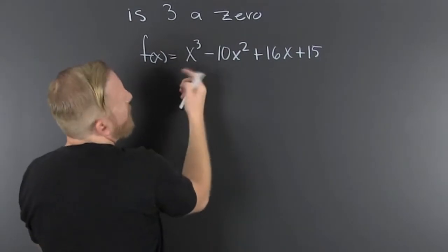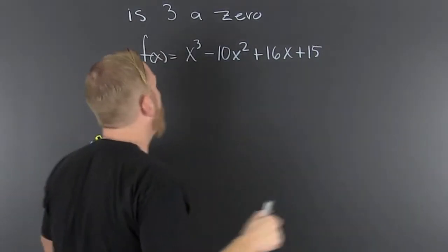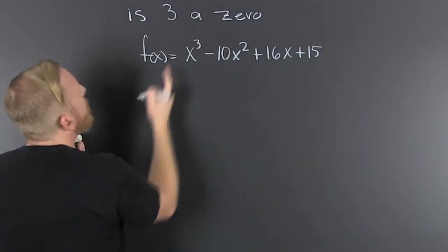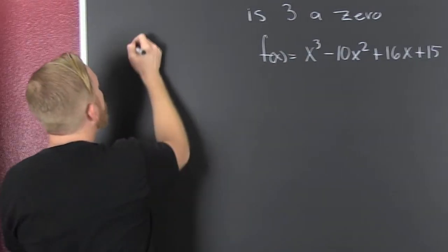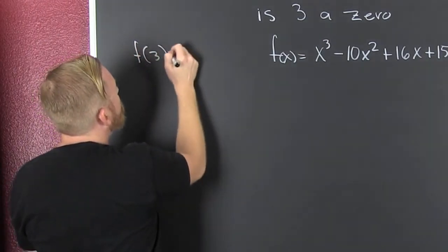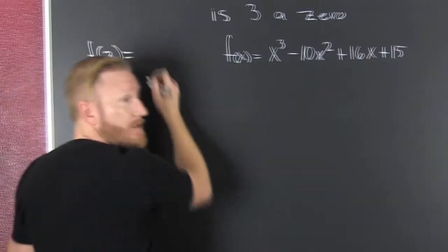So let's use substitution. We could use synthetic division, but that's not here, not now. If 3 is a zero, then f of 3 will be zero.